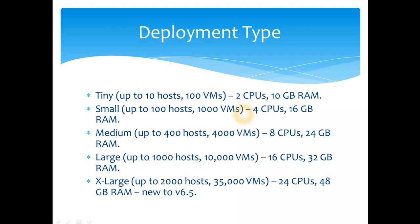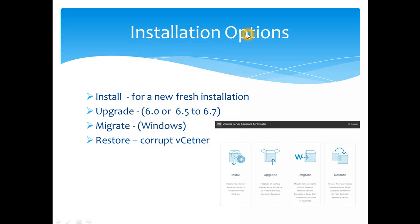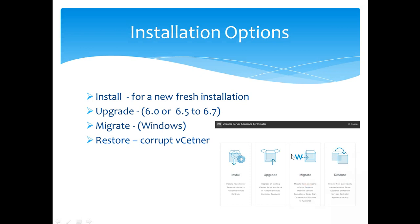When installing, the installer presents four options. Install is for a fresh installation. Upgrade is for when you have vCenter 6.0 or 6.5 running and want to upgrade to 6.7. Migrate is used for that upgrade path as well. Restore is for when you have a corrupted vCenter and want to restore it.